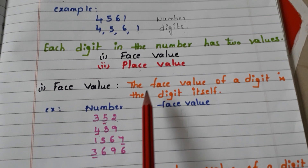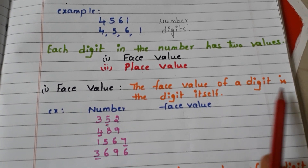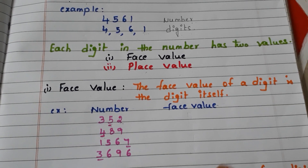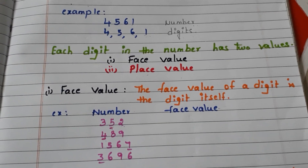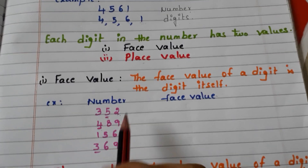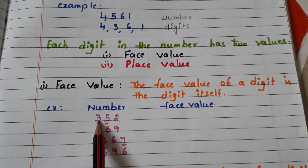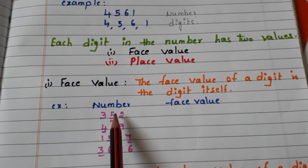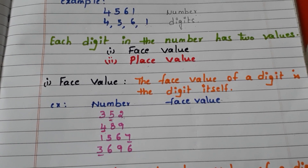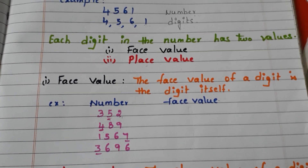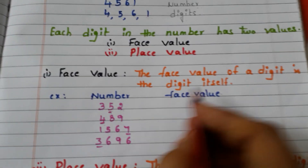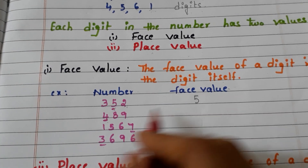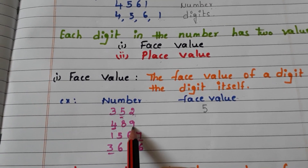First, face value. The face value of a digit is the digit itself. Here we have some examples and we have to find the face value. In the number 352, the line is under 5, so we have to find the face value of 5. Face value is nothing but the digit itself, so the face value of 5 is 5 itself.